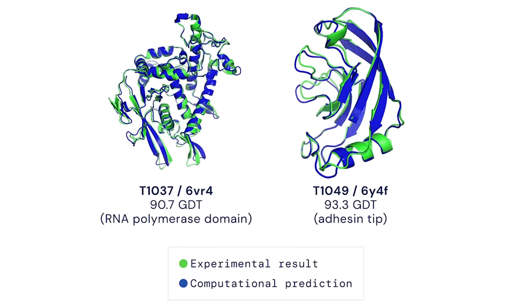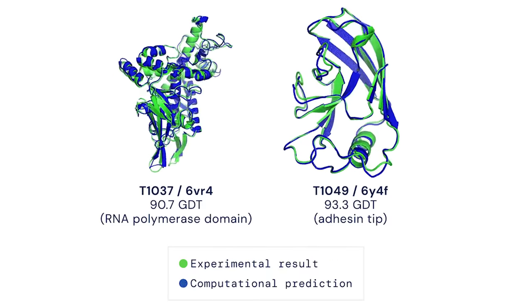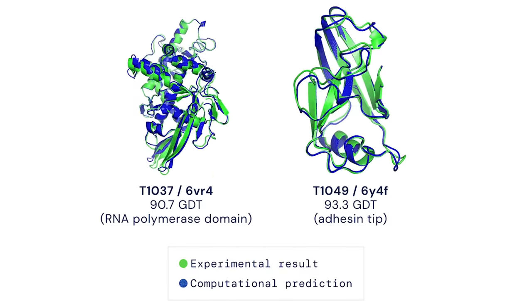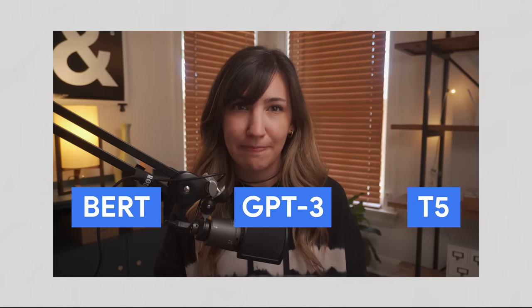Transformers are models that can translate text, write poems and op-eds, and even generate computer code. They've been used in biology to solve the protein folding problem. Transformers are like this magical machine learning hammer that seems to make every problem into a nail. If you've heard of BERT or GPT-3 or T5, all of these models are based on transformers.